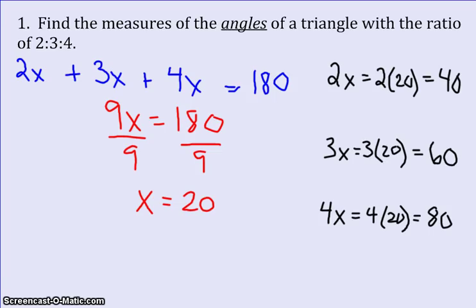We should double check to make sure we solved it correctly. Hopefully you can see that if you added these three up, it should equal 180. So does 40 plus 60 plus 80 equal 180? It sure does. 40 plus 60 is 100, 100 plus 80 is 180.